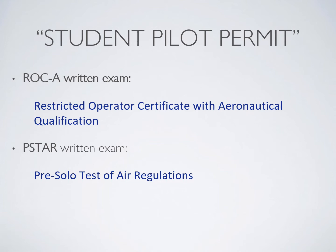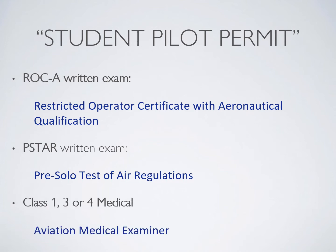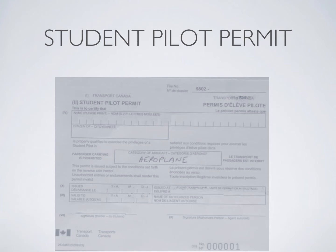You're also going to need to write the P-STAR — your pre-solo test of air regulations. You have to score over 90%. It's a multiple-choice exam with free study guides available online, and you can book it with your local flight school or a Transport Canada office. Getting those two exams done early is a huge advantage. You'll also need an aviation medical done with a specific aviation medical examiner — you'll need a Class 3, 4, or Class 1 medical. Once those three things are done, you get your student pilot permit from an authorized person, and you must carry it every time you fly solo.